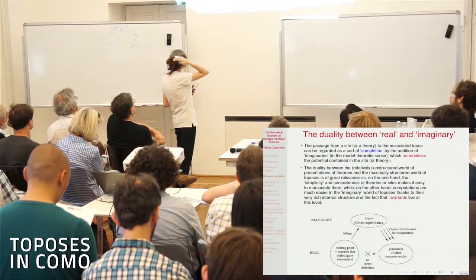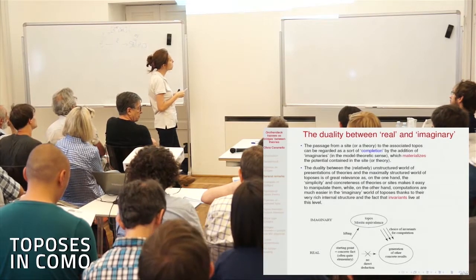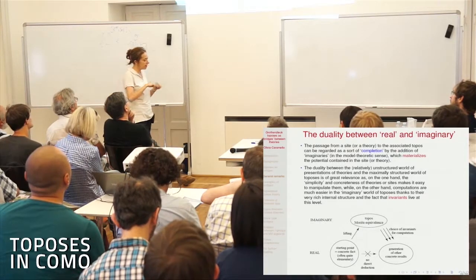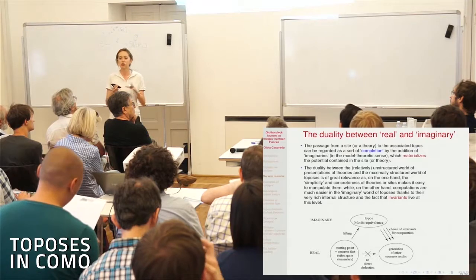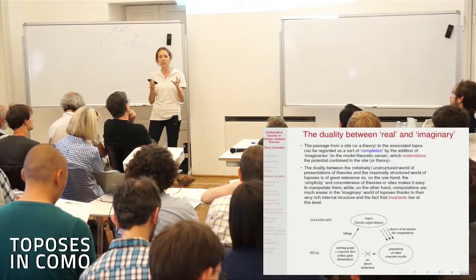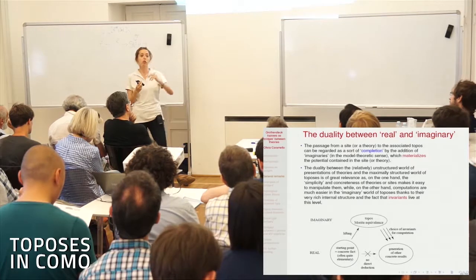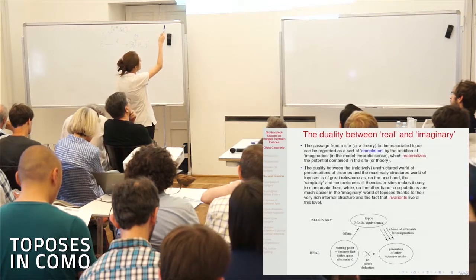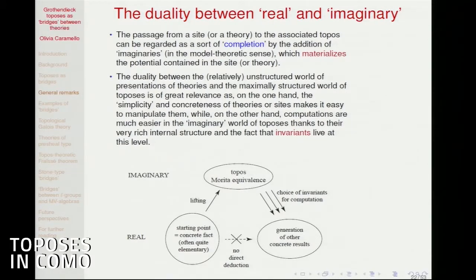This tells us a lot about how we should think about toposes and their relationships with theories and sites. When you have a theory or a site, you should think of it as something incomplete — a sort of sketch, just a sketchy presentation of a certain content which will be materialized when you go to the corresponding topos. This completion by the addition of imaginaries materializes the potential implicit in the site or the theory.